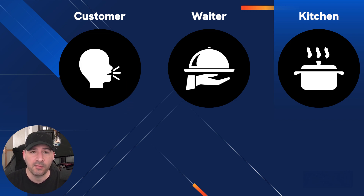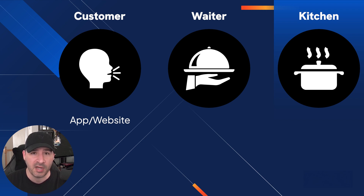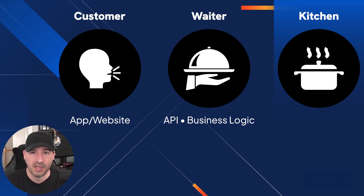In this example, we can think about the customer as the front end of the application or website. It's what the user sees and interacts with — it's where the inputs are happening. The waiter is the API.